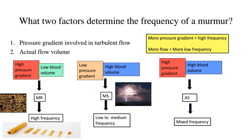Coming to another example, we have a condition wherein the murmur is produced because of a high pressure gradient and high blood volume. Both the pressure gradient and the amount of blood are high. The high pressure gradient gives rise to high frequency, but the high volume gives rise to low frequency — this is commonly seen in cases of aortic stenosis. In severe aortic stenosis, the LV-to-aortic pressure gradient is obviously high, and because the entire cardiac output must pass across the diseased aortic valve, the blood volume is also high. As a result, there is a mixture of frequencies and you get a mixed-frequency ejection systolic murmur of aortic stenosis.